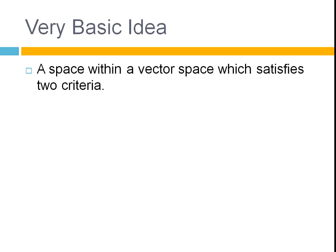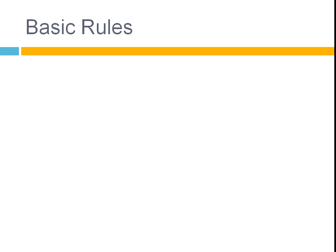So, the very basic idea of the subspace. A subspace is a space within a vector space. The vector space is the bigger, the whole space, which satisfies two criteria. There's two rules that define if something is or isn't a subspace and they're very simple rules.